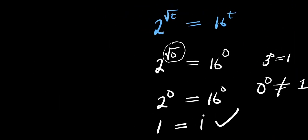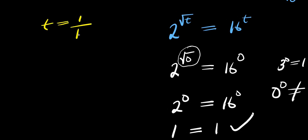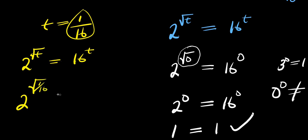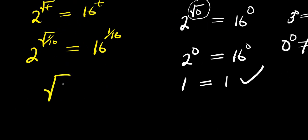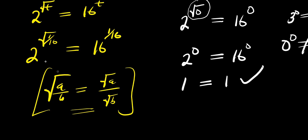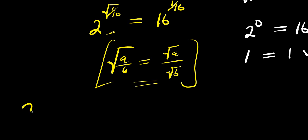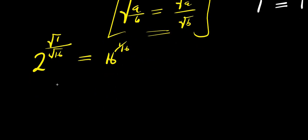Now let's verify t = 1/16. We have 2^(√(1/16)) = 16^(1/16). Using √(a/b) = √a / √b, the left side becomes 2^(√1 / √16) = 2^(1/4). The right side is 16^(1/16).